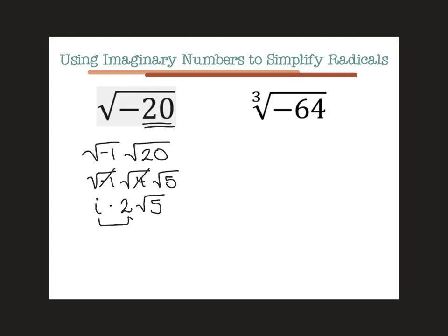Typically, we write the numbers in front of i, so we're just going to switch these two to be 2i times square root of 5.